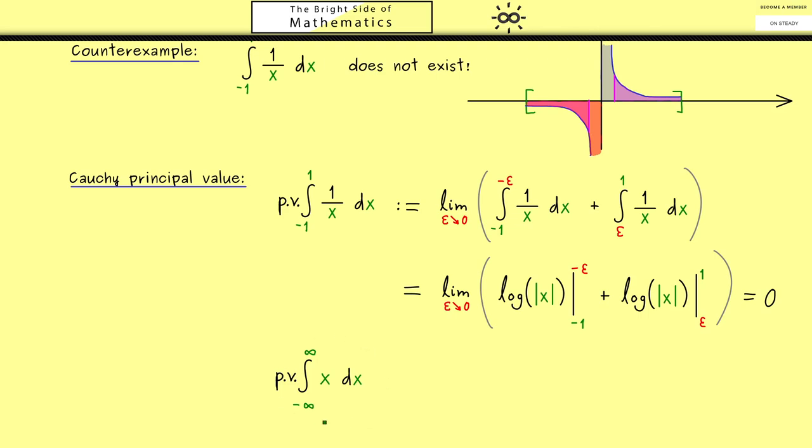Of course, the improper Riemann integral of this function cannot exist. However, as before, if we do the limit in a symmetric way we get out a result. So you see we do a symmetric integration around zero, and then we send a to infinity.